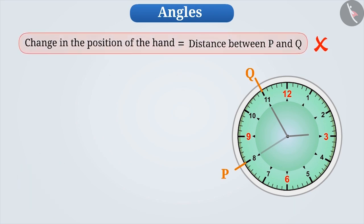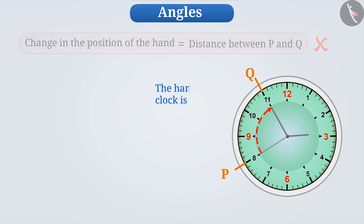This will not be correct because here the entire hand of the clock is not changing the position. Instead, one end of the hand is fixed at one place while the other end of the hand is changing position. In this way, we say that the hand is moving or it is said that the hand is rotating.